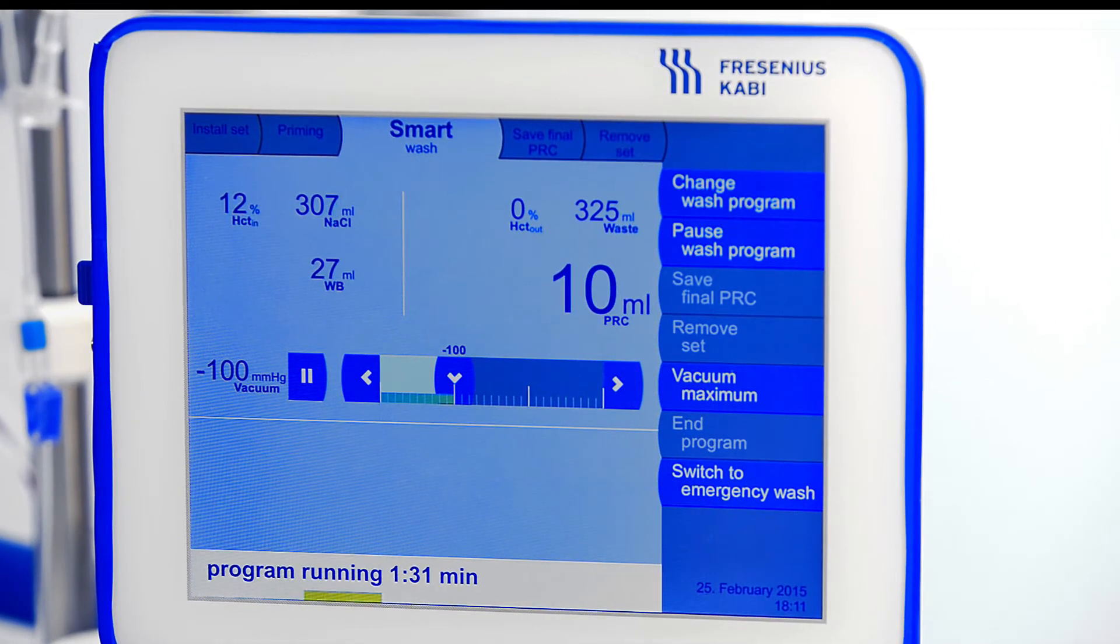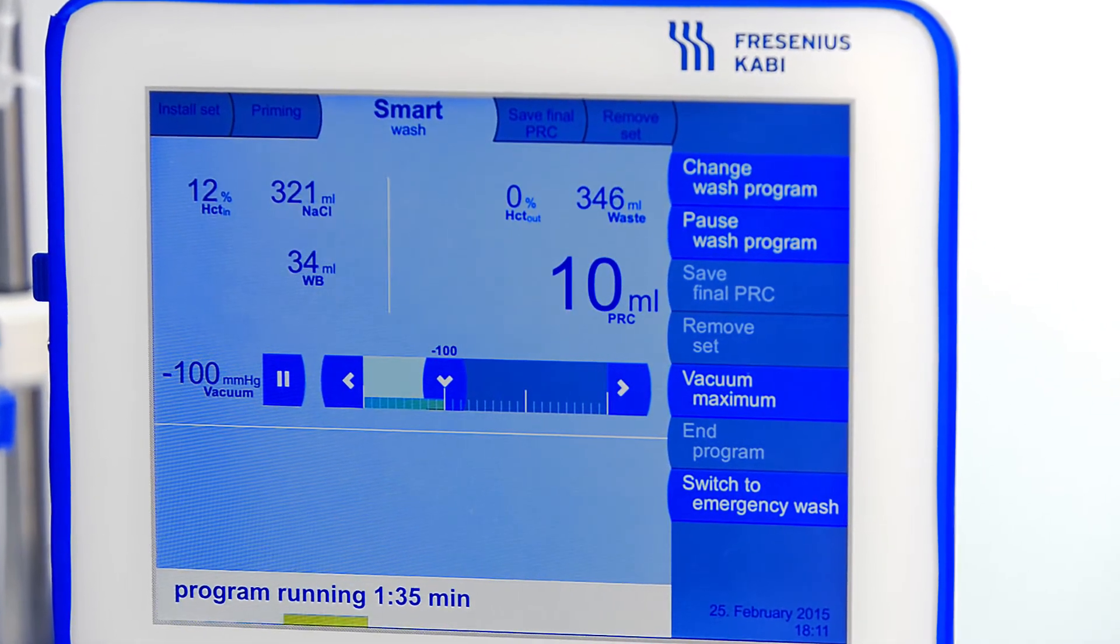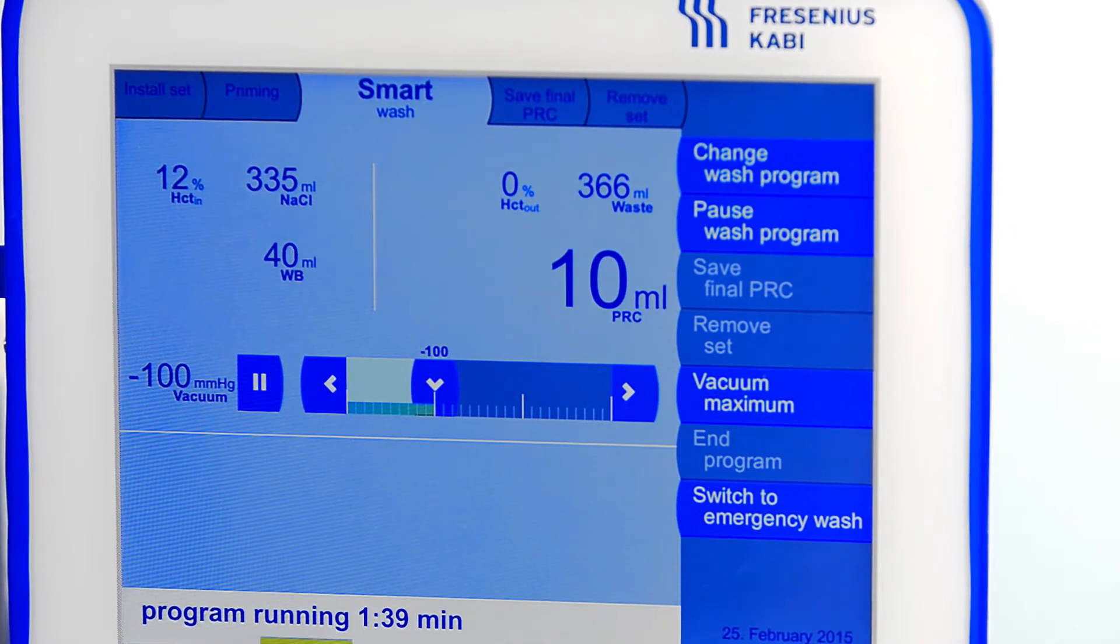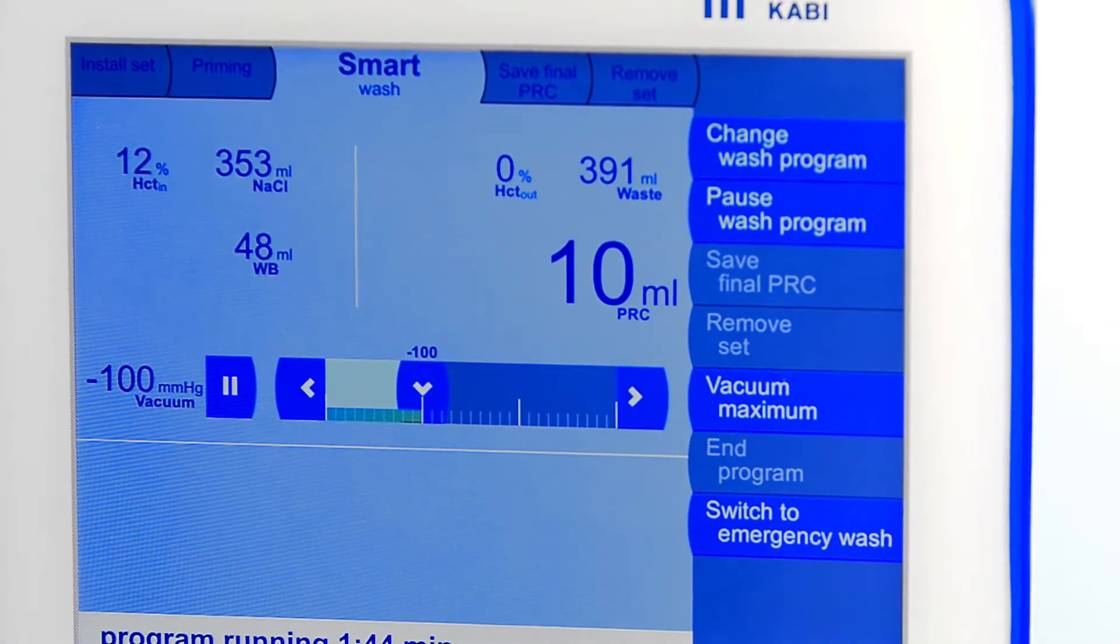Volumes of all blood liquids can be monitored at the touch screen during processing, such as incoming hematocrit, outgoing hematocrit, saline volume, waste volume, and final packed red cells volume.